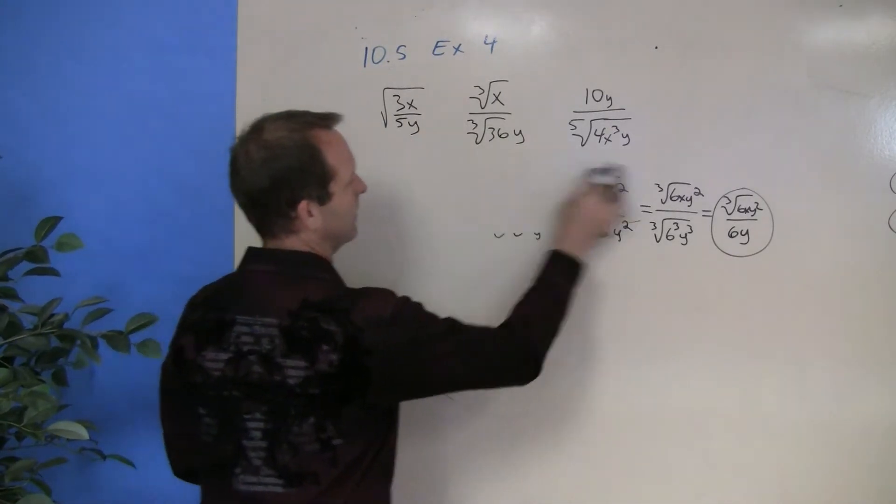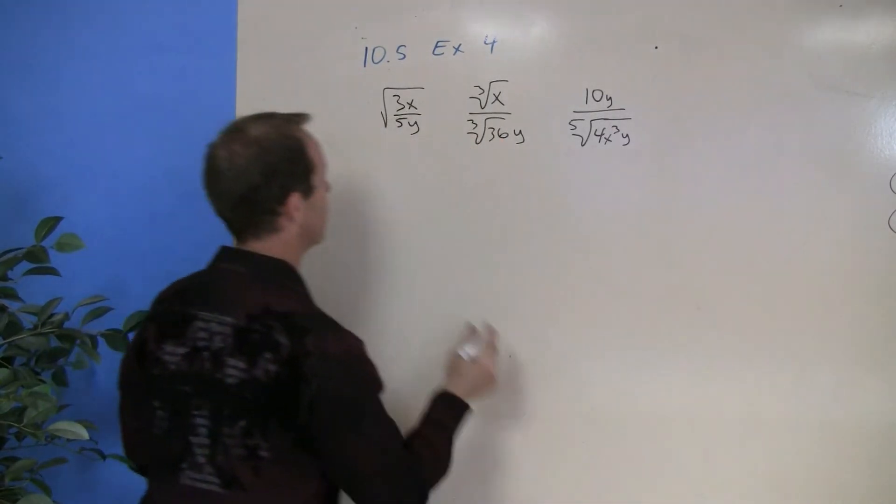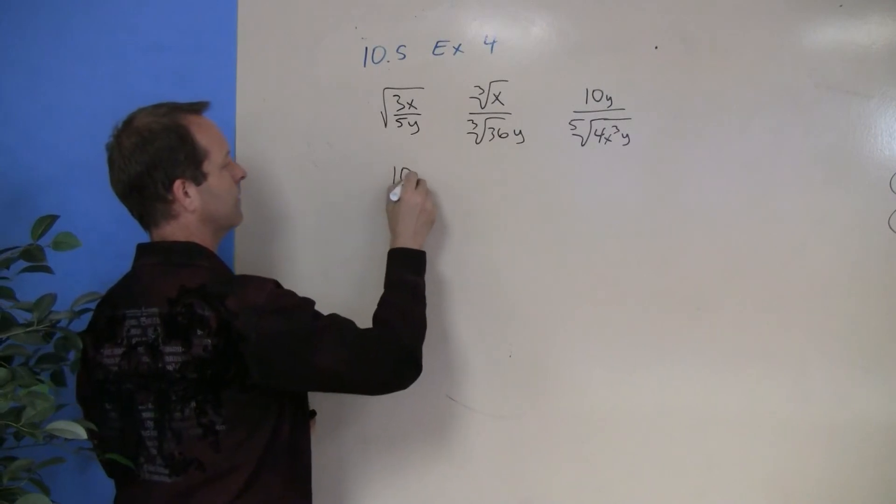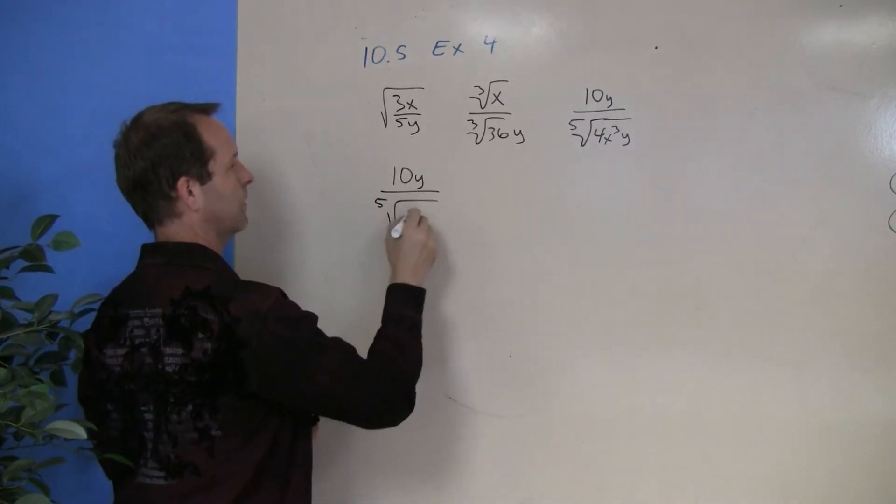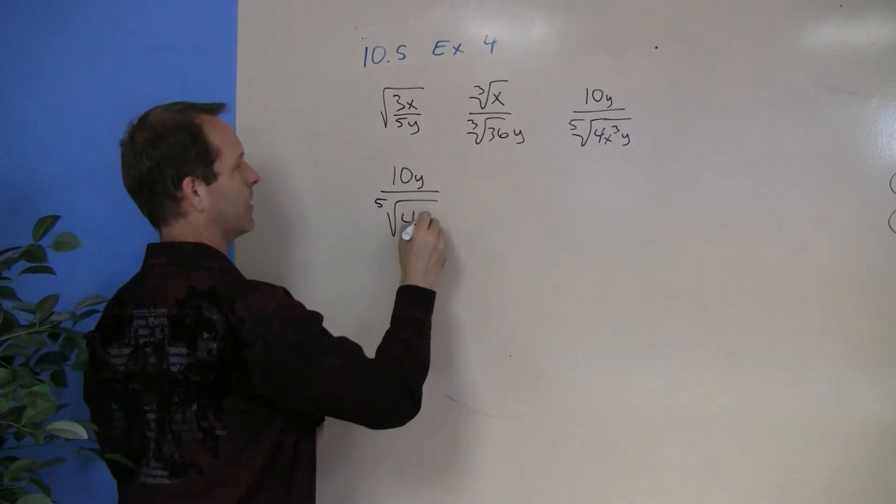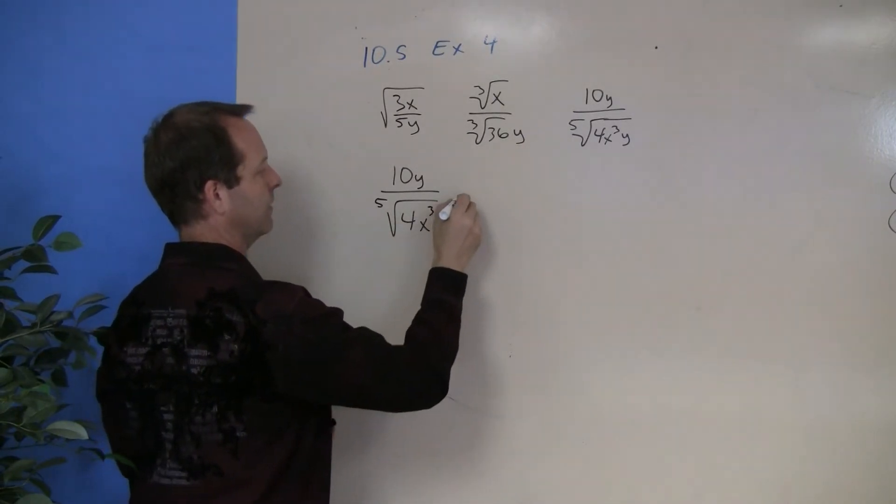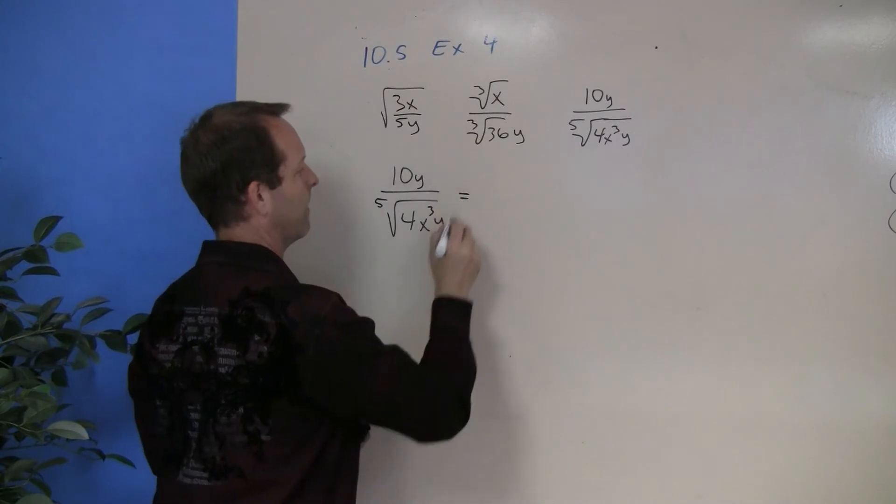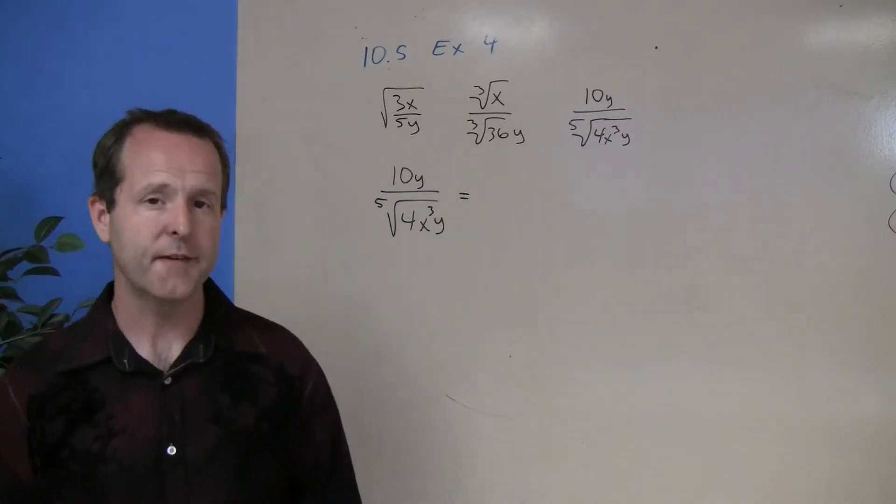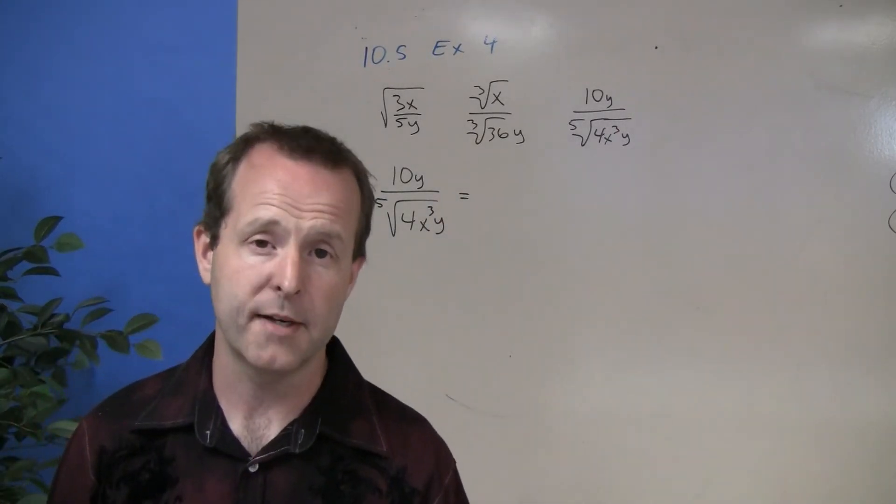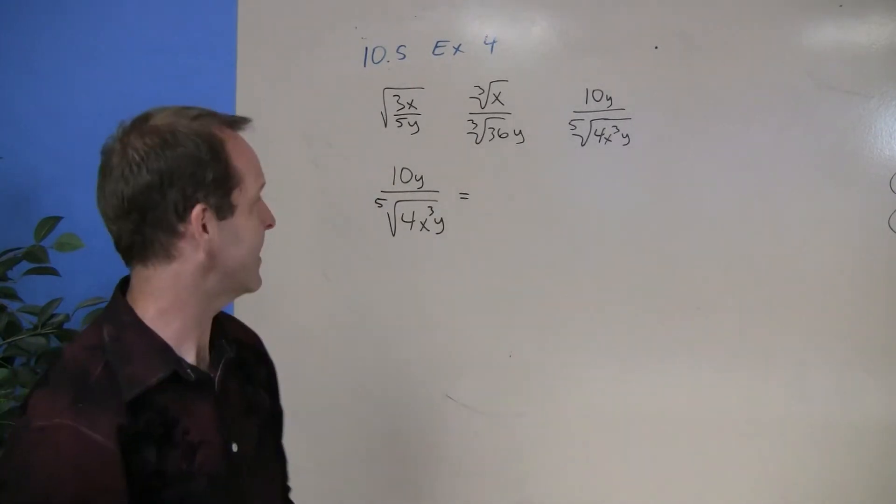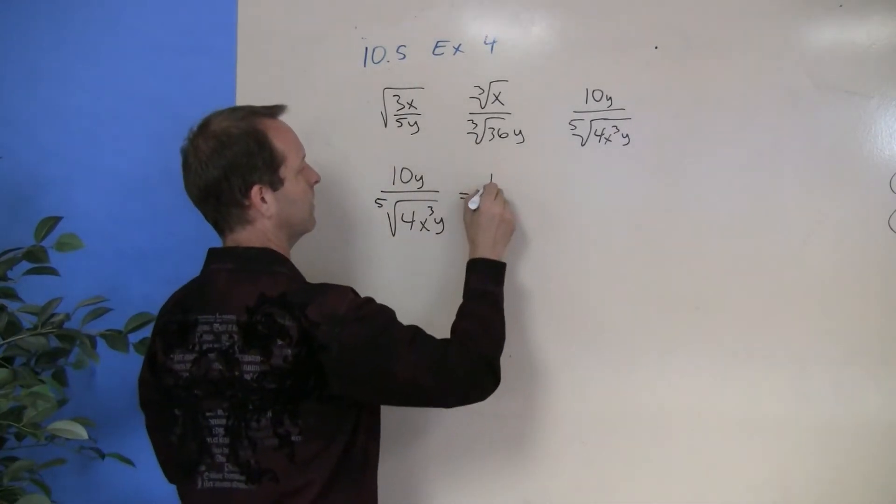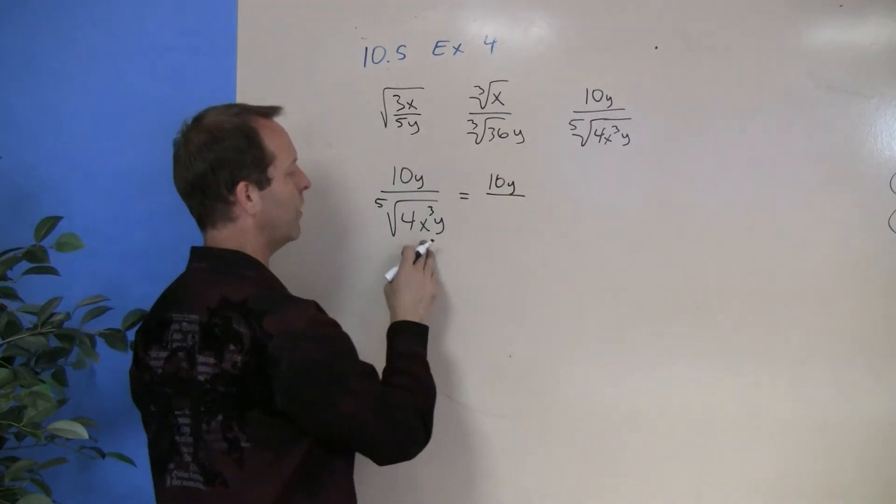The last problem that you see up here: 10y all over the fifth root of 4x cubed y. Well, this one's going to be a little bit more difficult to determine what's that lowest common denominator to use. So I might use the strategy I used on that last example. I'm going to rewrite this one.